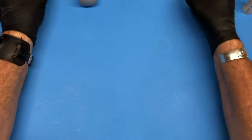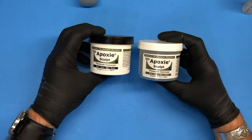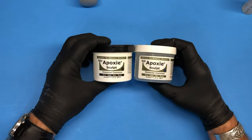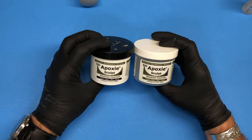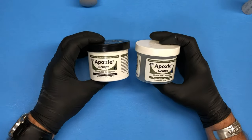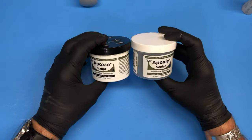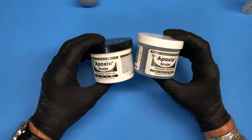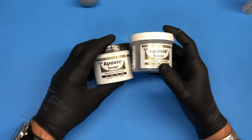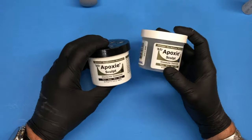So what do you need to do this? First of all, you need putty, and in this case we're going to use Apoxie Sculpt. I found out over time that Apoxie Sculpt is a little bit better in my preference than Milliput. It doesn't go bad as much because it comes in airtight containers, and you get a little bit more bang for your buck. But like I said, Milliput is just as good.